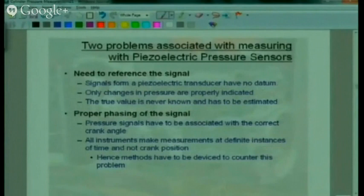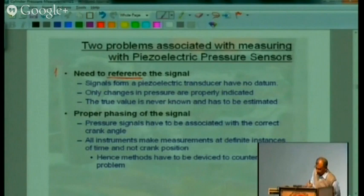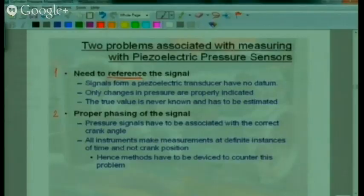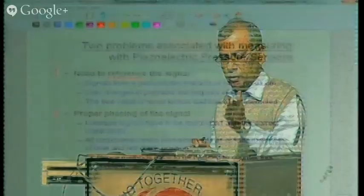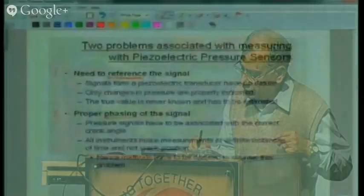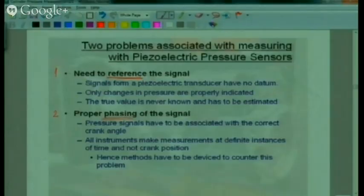Even with the best possible transducer and best mounting practice with no drift, you will still have two problems: referencing and phasing. Referencing means that the piezoelectric transducer can give you a signal but this signal has no reference. The transducer can only give you changes in pressure — you only know the delta between two points, not the absolute value at either point. You get only relative changes in pressure, and from those you have to get the actual pressure.